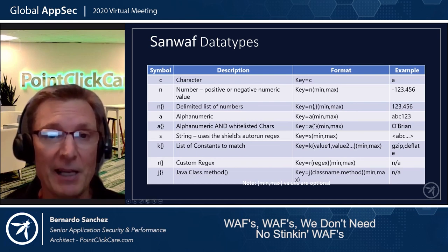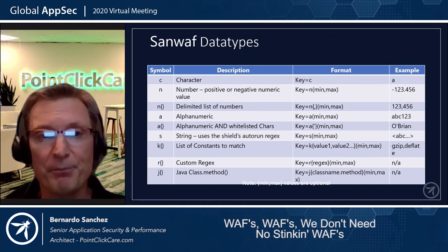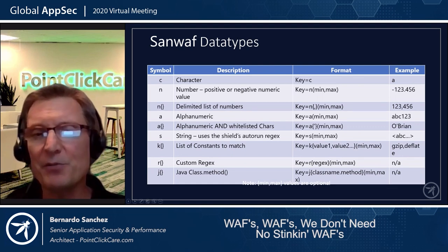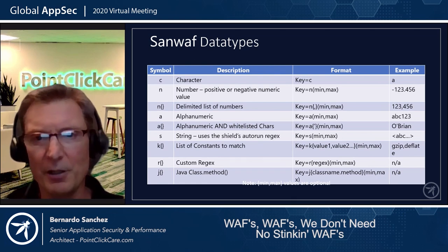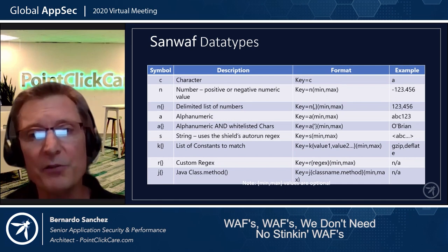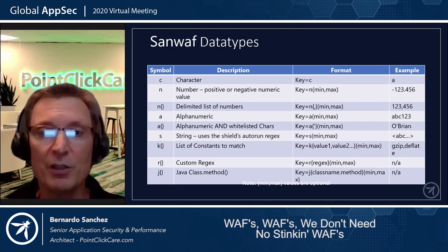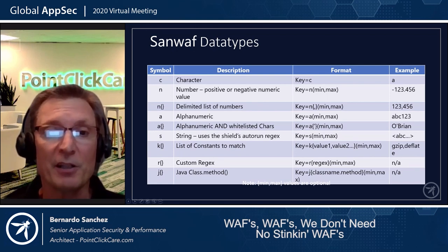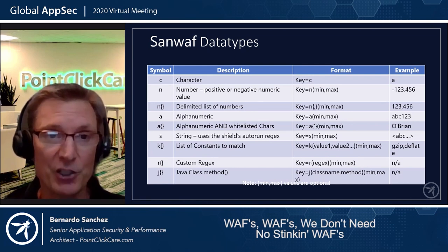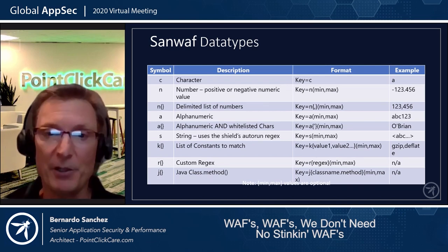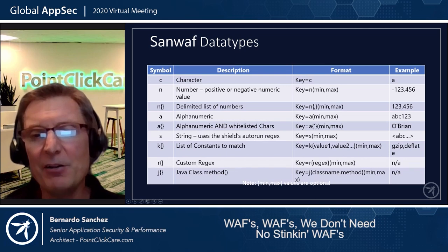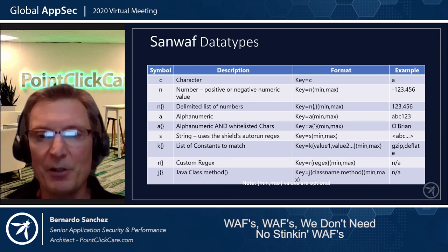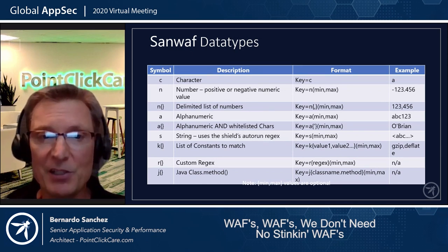Next is string, which uses the shield's auto-run regexes. Then constant — a list of constants to match. For instance, if a form asks for user sex with values male, female, or other, you specify those three constants; if the input isn't one of them, it's rejected. Next are custom regexes — ones you define specifically for a parameter, not the auto-run ones; useful for date fields across many parameters. Finally, the Java class method data type allows you to run a Java method for a particular parameter — very powerful; you can connect databases and do virtually anything.